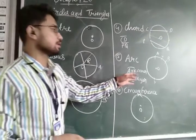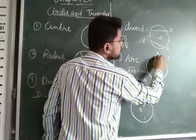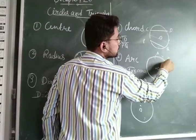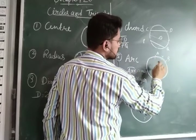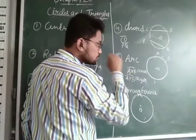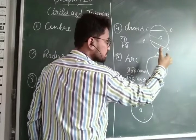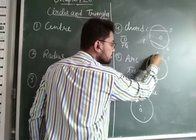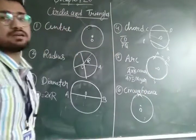Now let's jump to the arc. What is arc? If I want to consider a certain length of the circumferential boundary, then that length of the curvature is known as an arc. An arc consists of two parts: the minor arc — for example AXP — and the remaining one, which is known as the major arc.